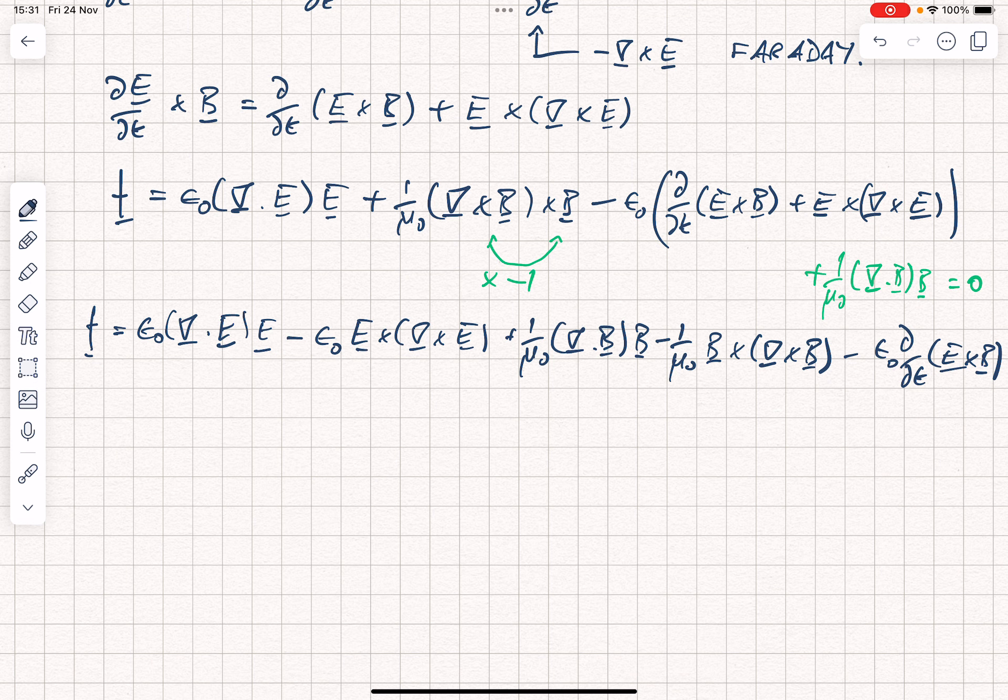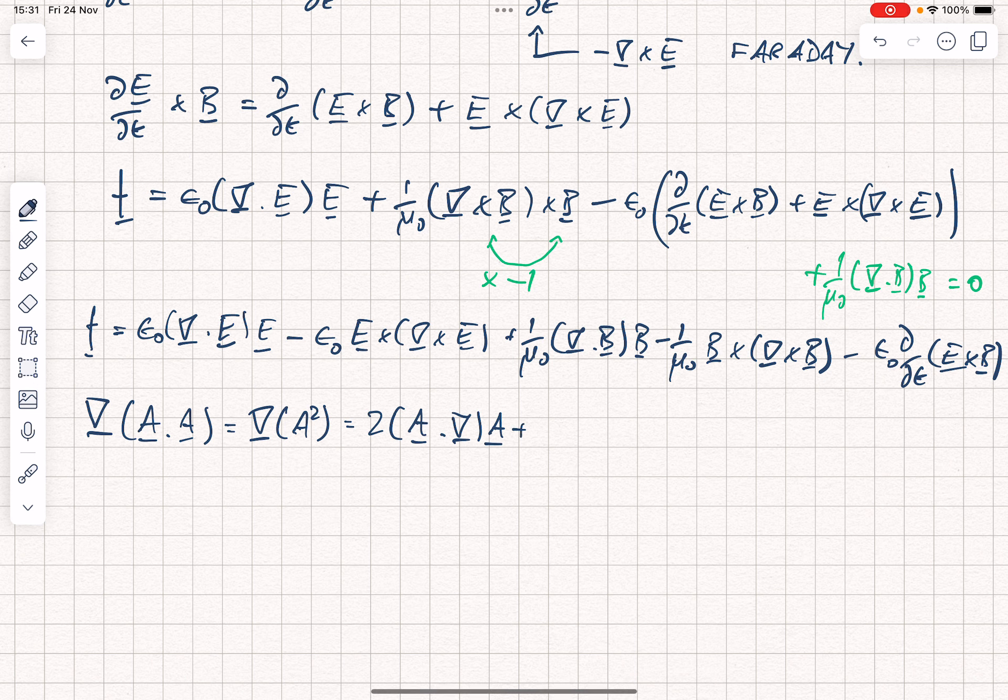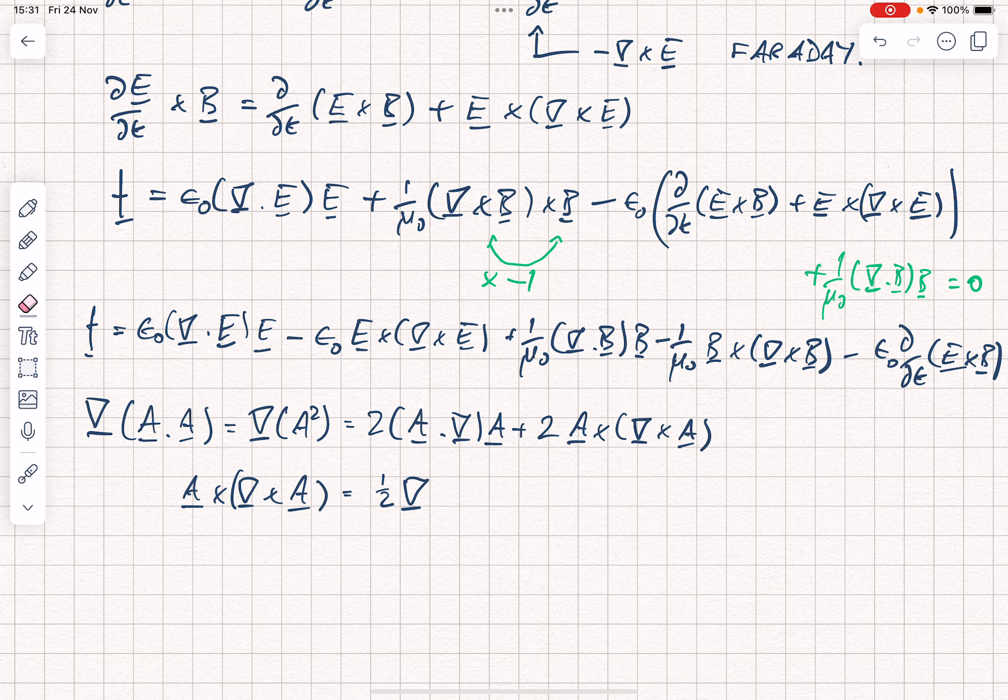Now, to simplify further, we're going to need to use another piece of vector calculus, which is as follows. We have that the gradient of A dotted with A, which is of course just the gradient of A squared, is equal to 2 A dot nabla A plus 2 A crossed with curl of A. And therefore we can write A crossed with a curl of A, and I hope you see where we're going at this point, is equal to a half grad of A squared minus A dot nabla A.